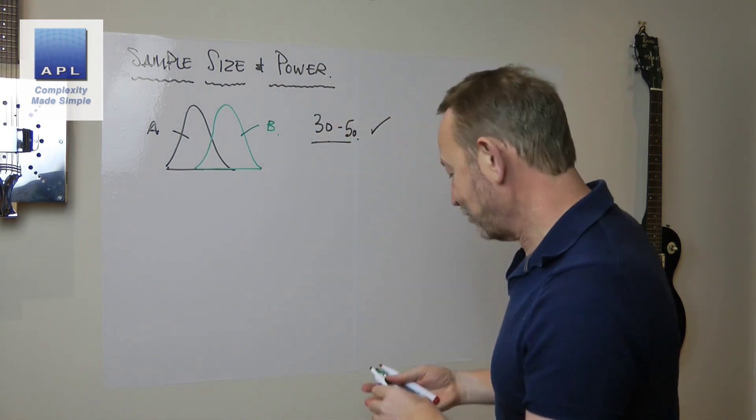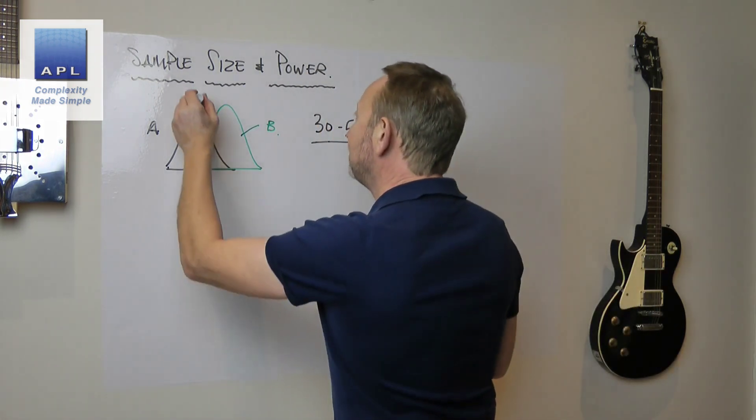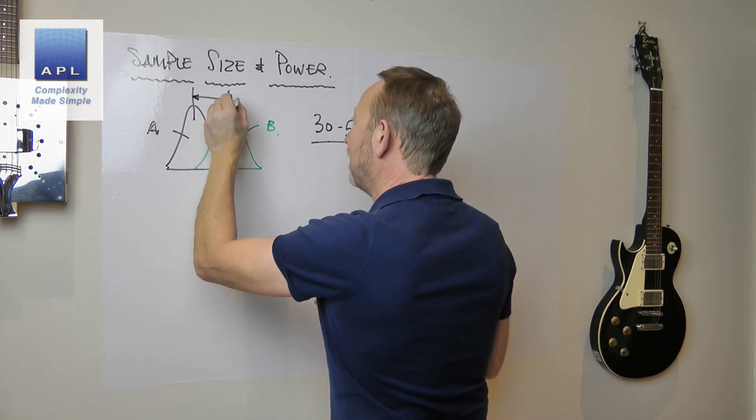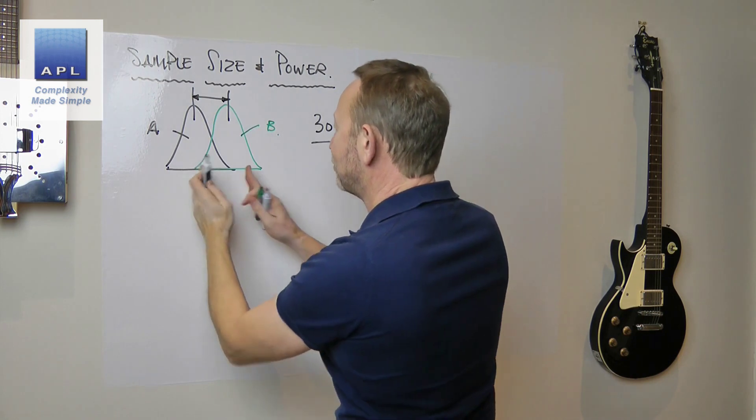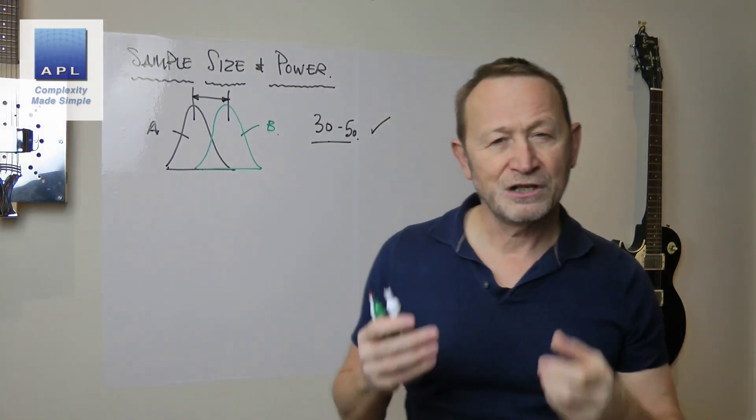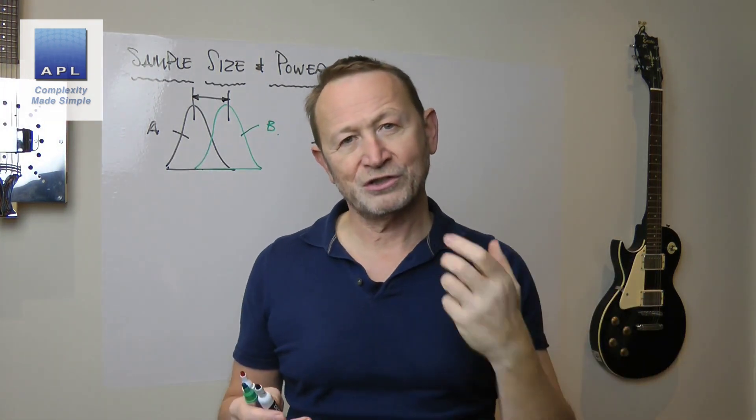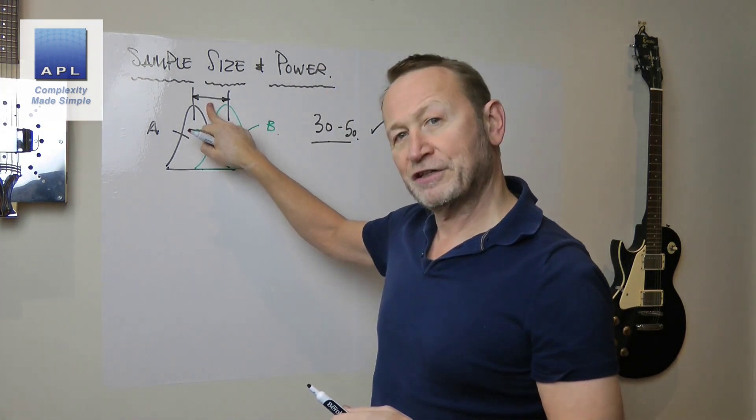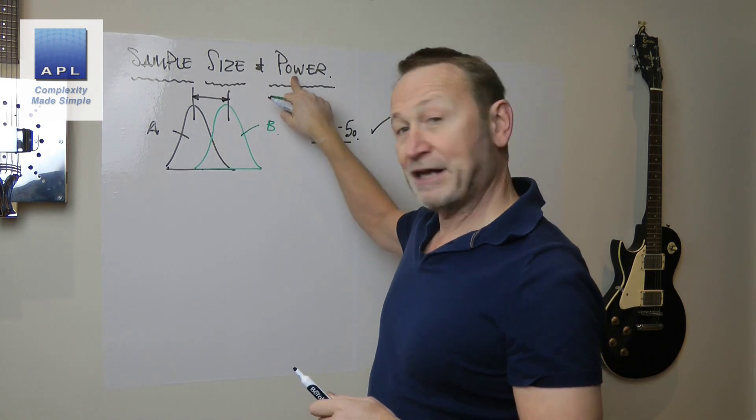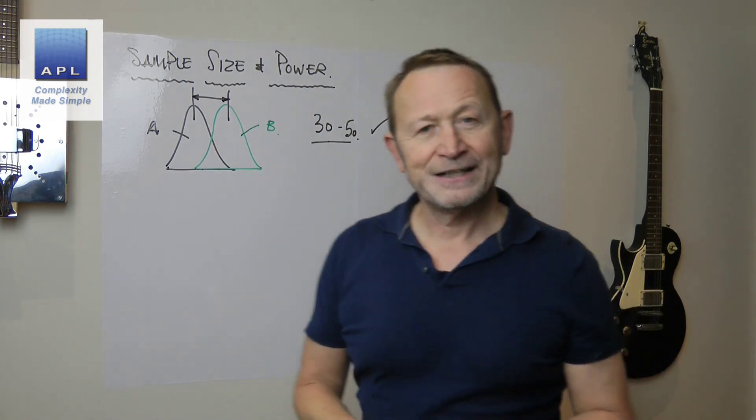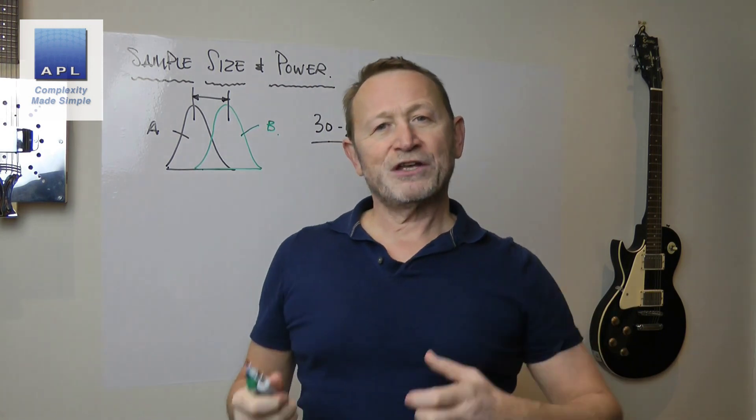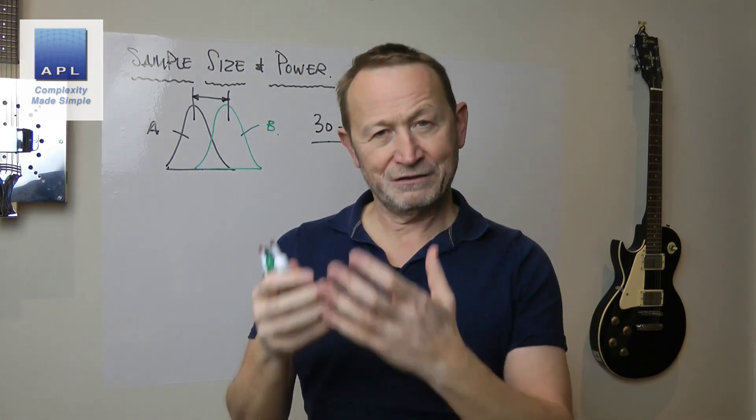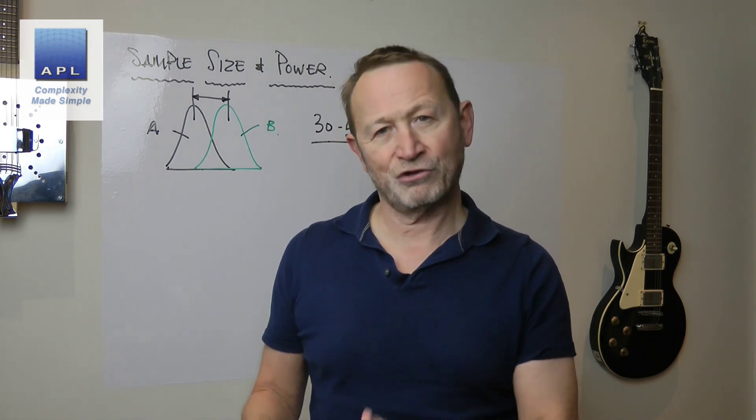Now then, the sample size you choose will have a power. What does power mean? It's the ability to see the shift. In this case look, A and B, the center, the average, the mean of the results was shifted. And depending on how big the shift is and how powerful the sample size is, that's going to tell you whether your sample size is capable of seeing the movement that you're about to create.